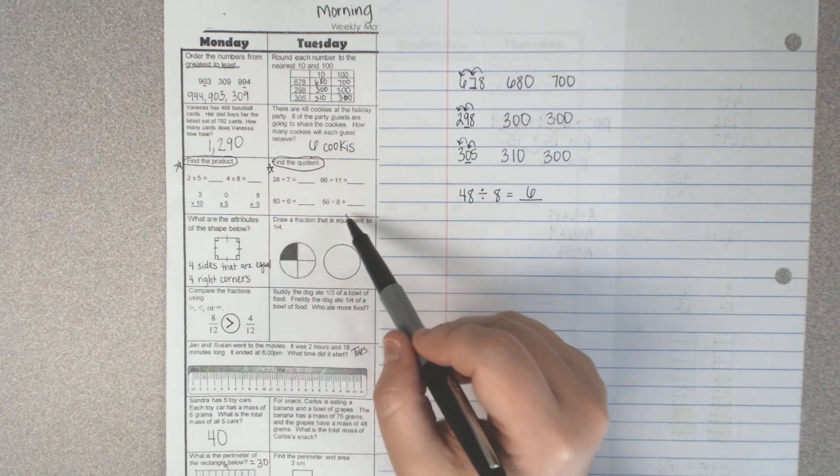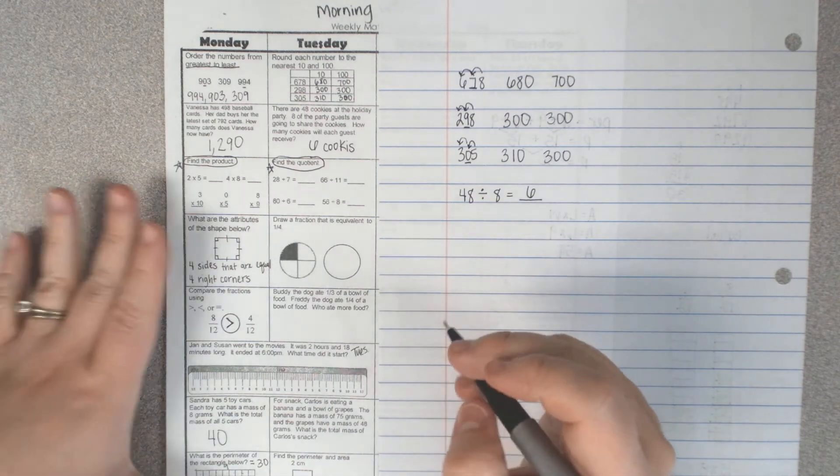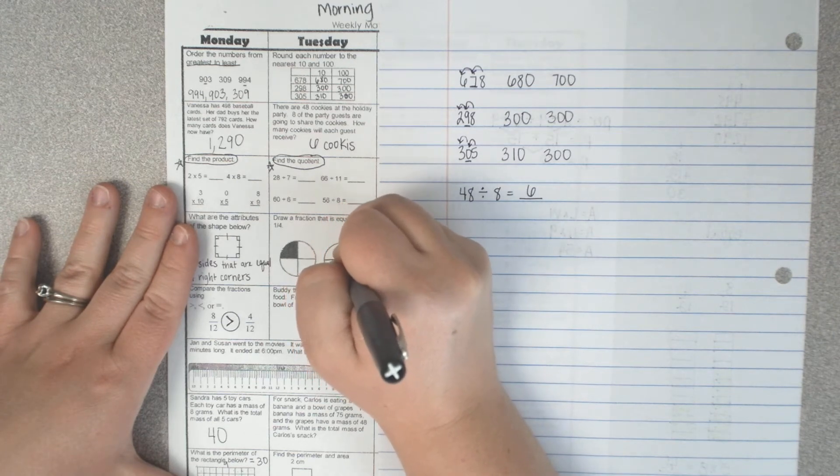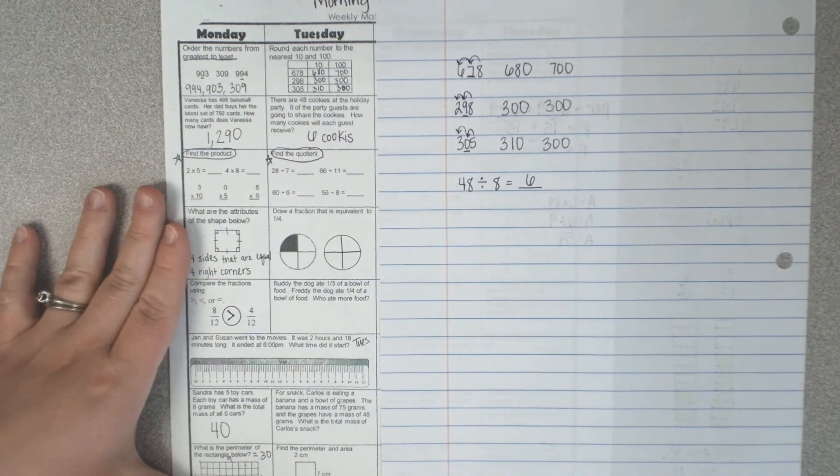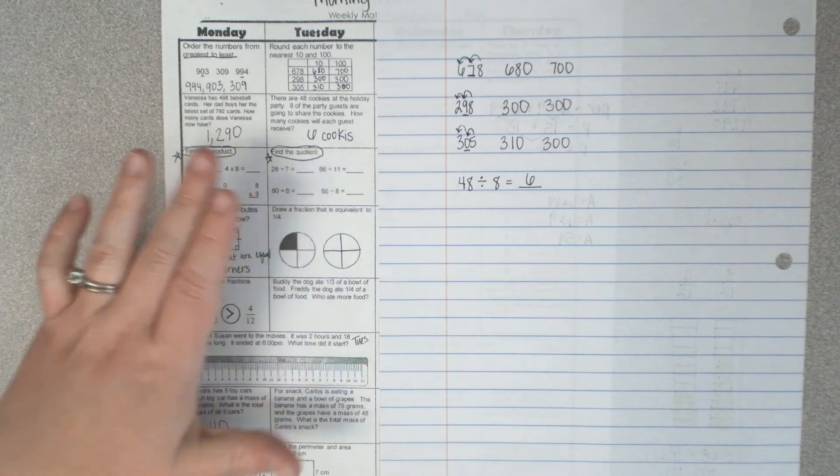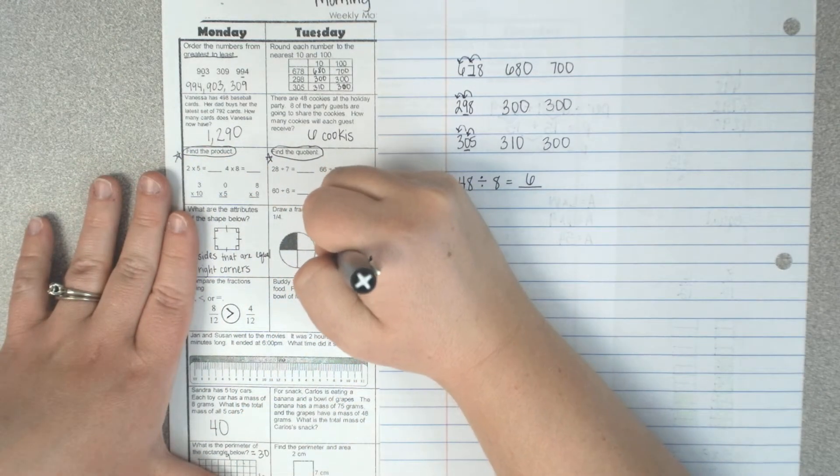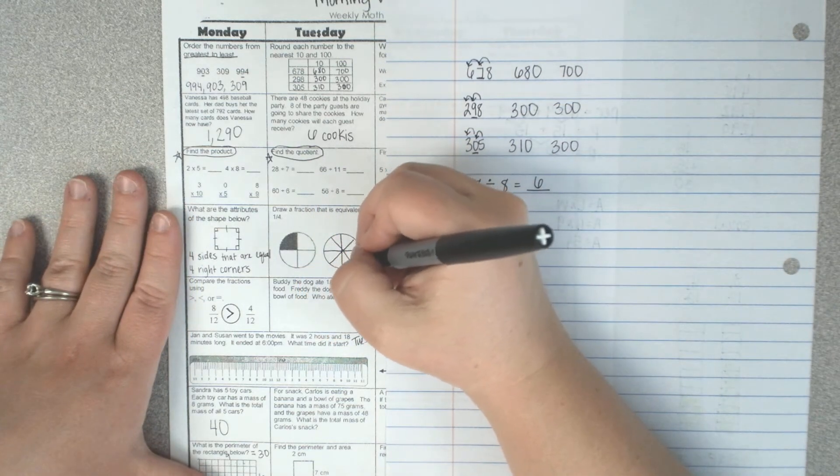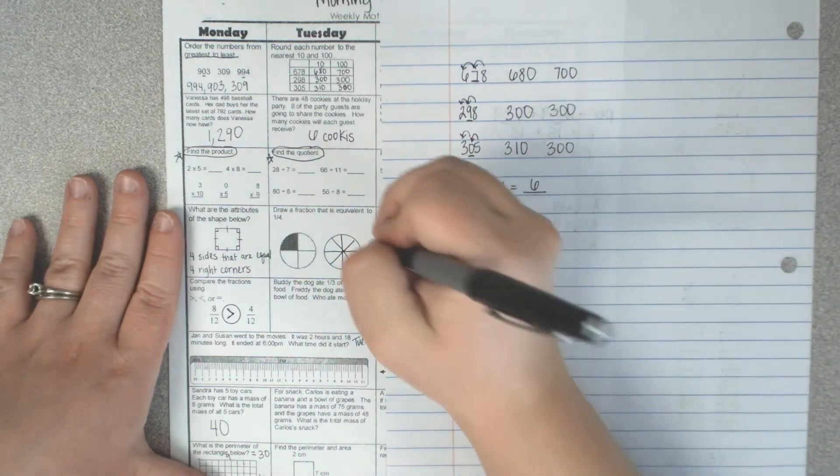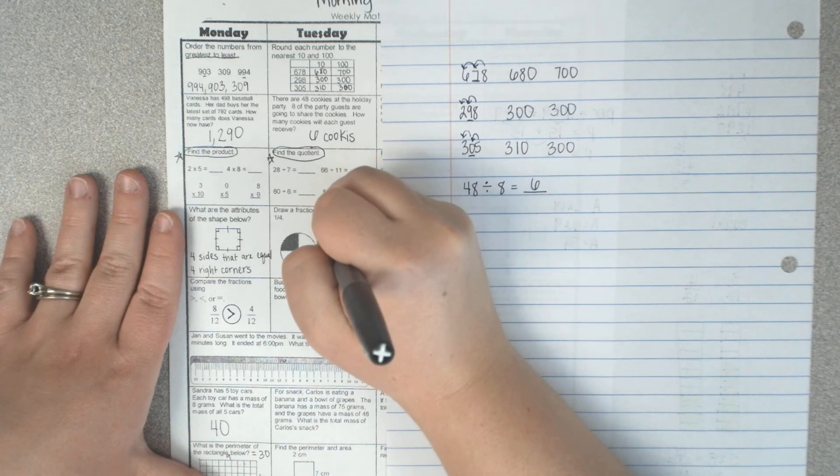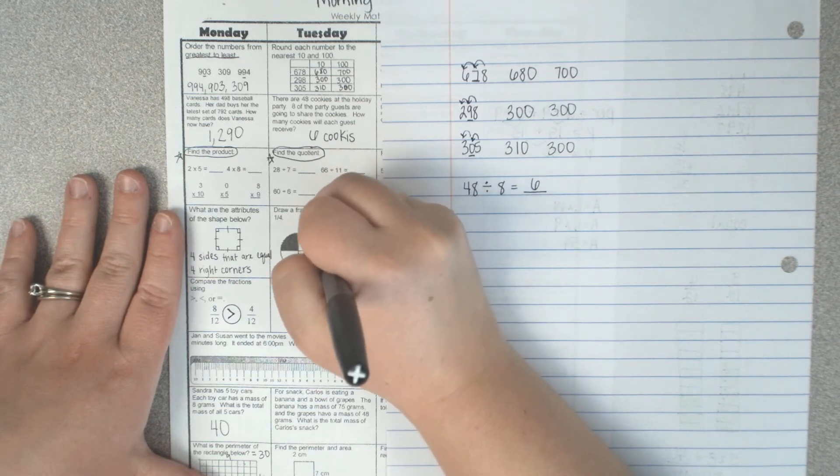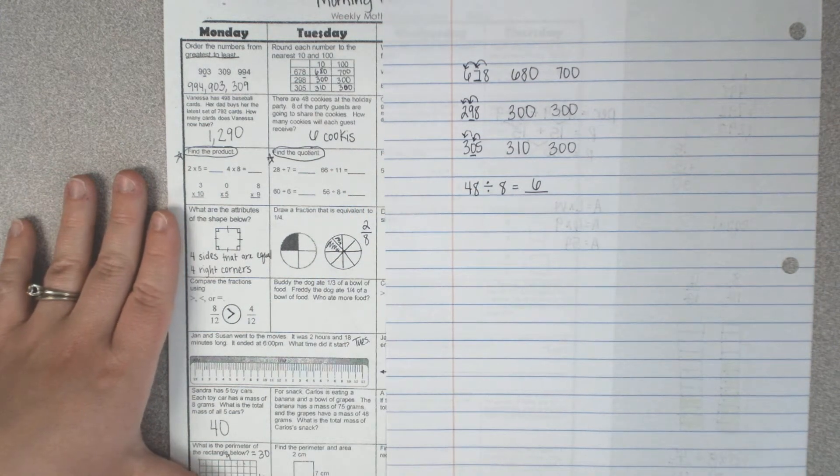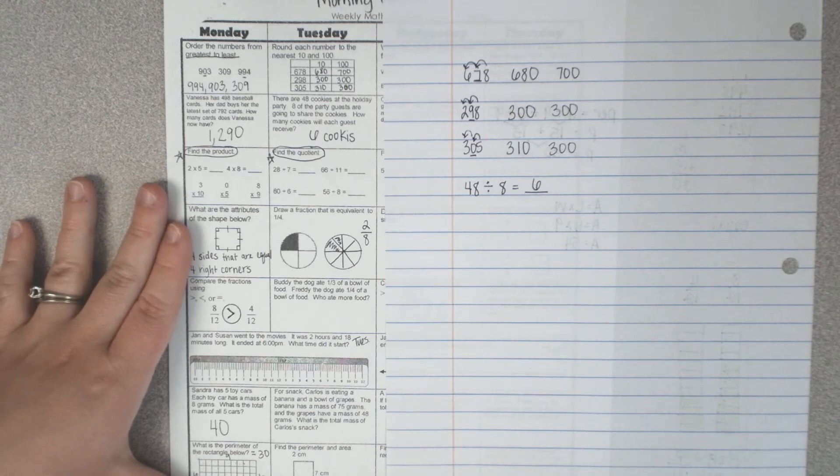The next one says draw a fraction that's equivalent to one fourth. So I'm going to draw a fourth. And then I can only shade in this one little thing over here. So I could split that in half, which now would make these one, two, three, four, five, six, seven, eight. And I could shade in one, two out of those eight, which would be equivalent. So two eighths is equivalent to one fourth.